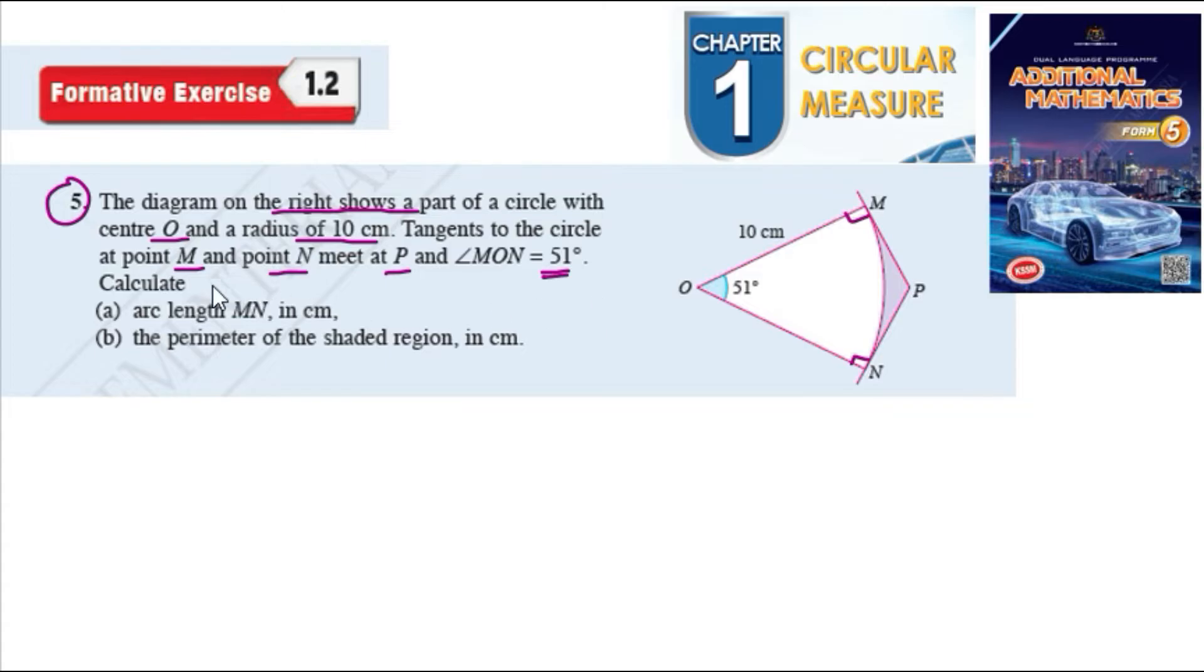Right, so calculate the length of MN in cm. When saying about arc length, we know arc length is equal to S, where the formula S equals r theta. So this one is the radius and this one is angle in radian. So we see here we have the radius already, which is 10 cm.